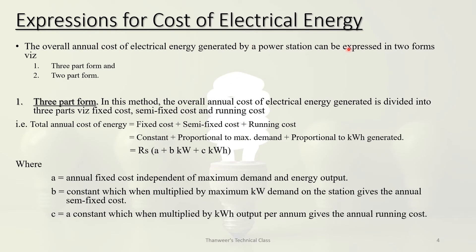The expression for the cost of electrical energy uses a three-part form. The total annual cost of energy is divided into: fixed cost, semi-fixed cost, and running cost. In the three-part form, the cost of energy is proportional to maximum demand and to kWh generated. Maximum demand can be expressed in kW, kVA, or kVAr — as seen in the power triangle.